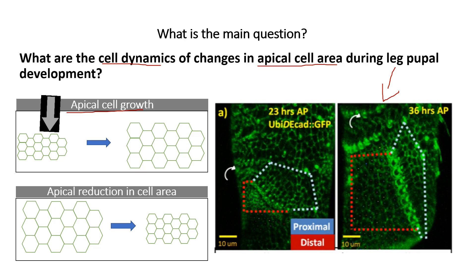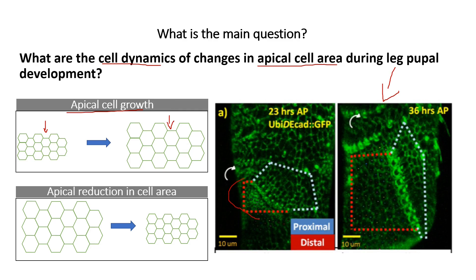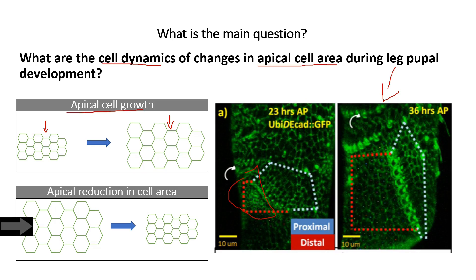Here the cells are small, and here they become much bigger in the second section, and this is what happened in this red section, that is the distal region of the leg. The cells are much bigger here, and we are going to study how this process takes place. We can also study how the cells produce in apical cell area.